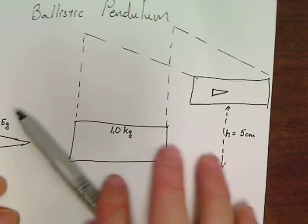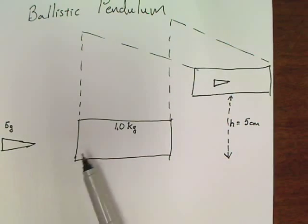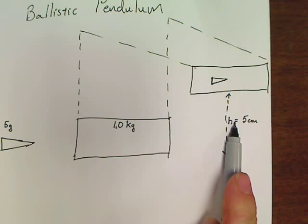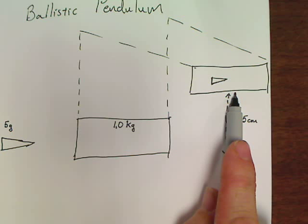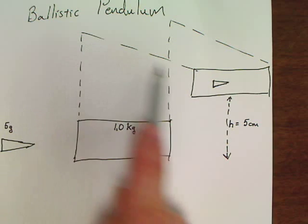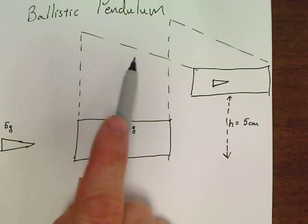Most of these problems are relatively almost the same. Usually they will give you either how high this block swings. If it wants to be a particular pain in the butt, this problem can give you the angle up here and the length of the rope and make you go back and figure out the height that it swings.